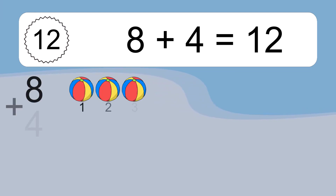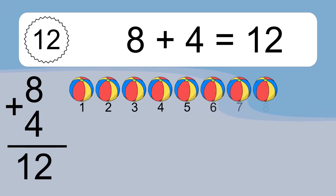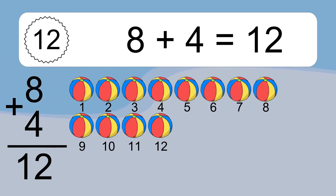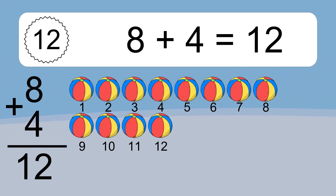8 plus 4 equals what? 8 plus 4 equals 12. Let's count it. 1, 2, 3, 4, 5, 6, 7, 8, 9, 10, 11, 12.